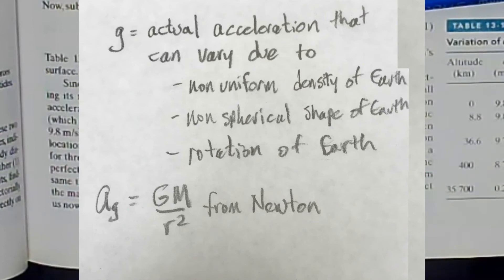Number one, Earth's mass is not distributed uniformly. Number two, Earth is not a perfect sphere. And number three, the Earth rotates.